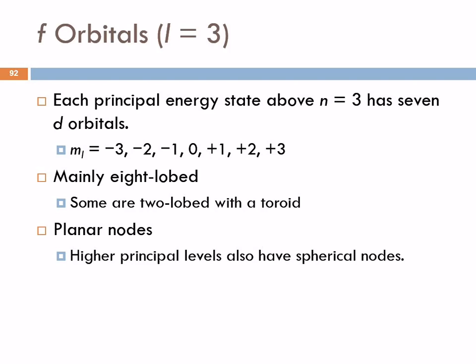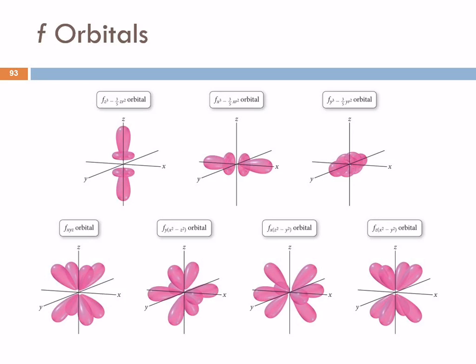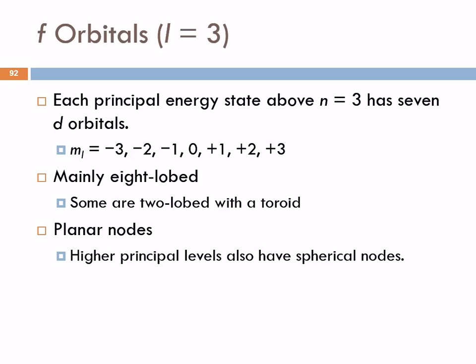The f orbitals are even stranger. Now we have seven different orbitals, because m sub l can go from minus three all the way up to plus three. Most of these are eight-lobed, but some of them are two-lobed with a toroid. And these also have planar nodes. The higher the principal energy level, the more nodes you have, and some of these have spherical nodes. So those are pictures of the f orbitals — looks like very bizarre balloon art. A student asks about seven f orbitals, which is confirmed.